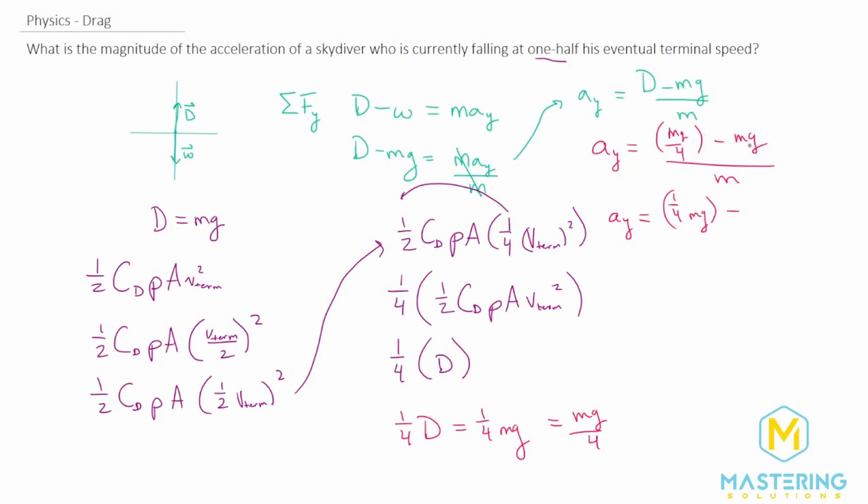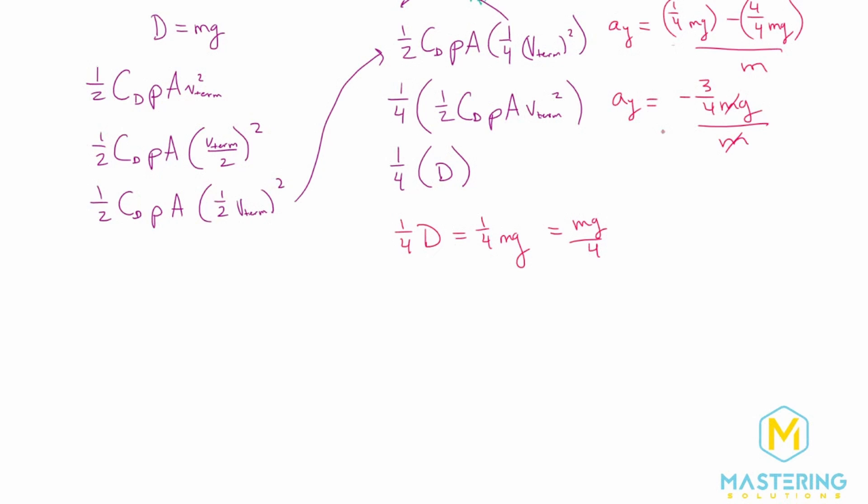So we have one-fourth times mg minus. Now we are going to be minusing a fraction here. But this is an assumed one. So one, we could also say, is four-fourths. So four over four times mg divided by m. And so a_y is going to be equal to one-fourth minus four-fourths is equal to negative three-fourths mg divided by m. The m's will cancel. So a_y is equal to negative three-fourths times gravity.